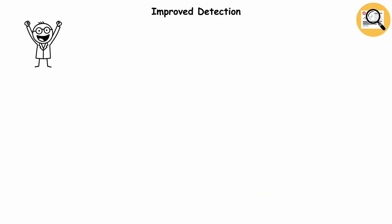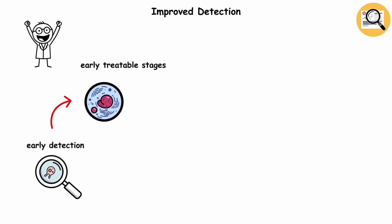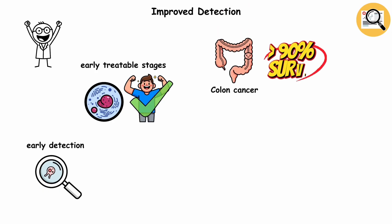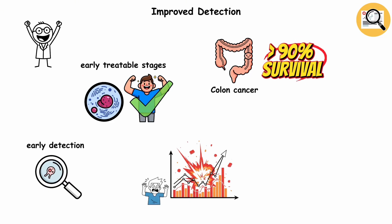And here's the good news. Early detection often means early, highly treatable stages. Colon cancer survival rates? Over 90% when caught early. So, yes, the stats can sound scary, but in this case, better tech is saving lives, not just raising alarms.